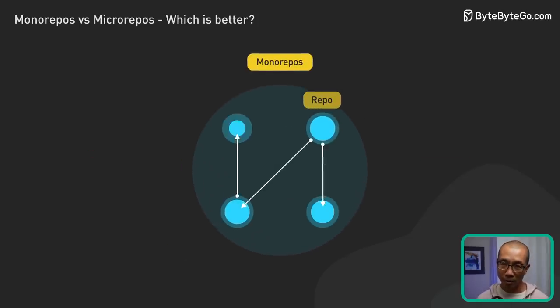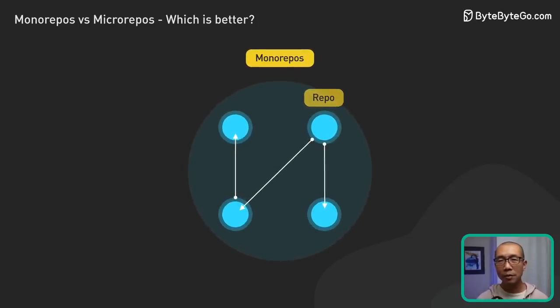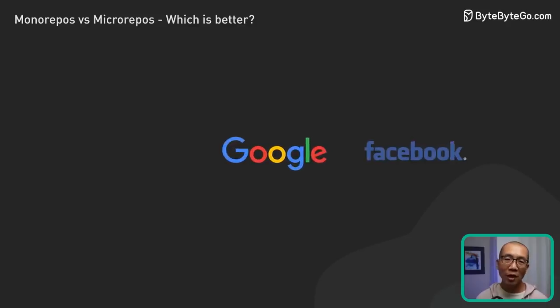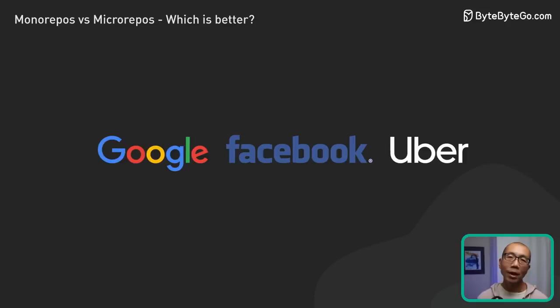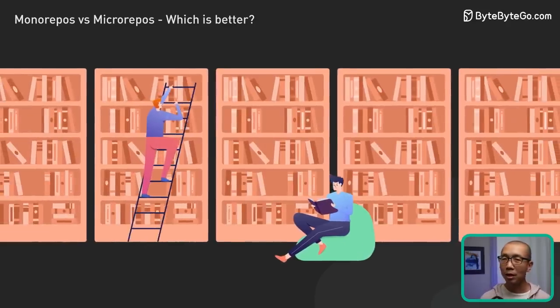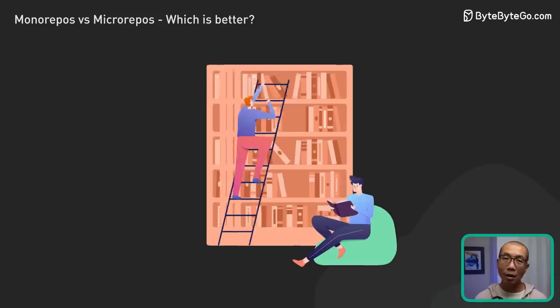Let's start with monorepos. Think of it as one central hub where all your code lives. Companies like Google, Facebook, and Uber have chosen the monorepo path. It's like a giant library, perhaps a bit daunting to navigate, but everything's under one roof.